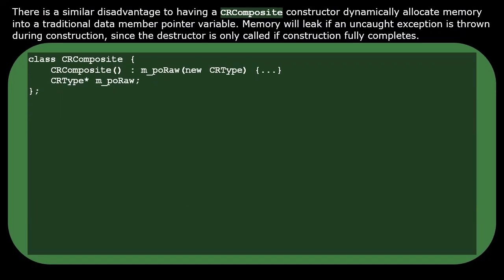There is a similar disadvantage to having a constructor dynamically allocate memory into a traditional raw data member pointer variable. Memory will leak if an uncaught exception is thrown during construction, since the destructor is only called if construction fully completes.